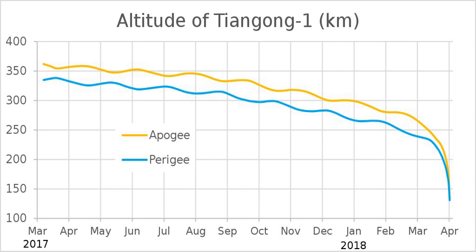In orbital mechanics, decay is a gradual decrease of the distance between two orbiting bodies at their closest approach, the periapsis, over many orbital periods. These orbiting bodies can be a planet and its satellite, a star and any object orbiting it, or components of any binary system.